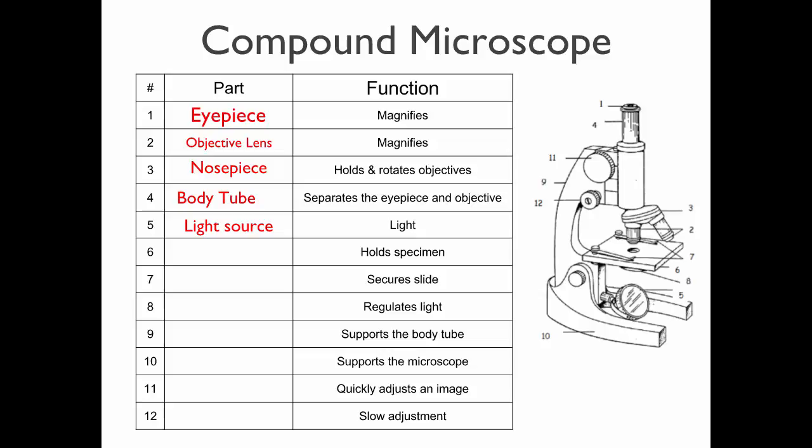This flat part where you put your slides to view is called the stage. Older microscopes have two clips that hold the slide on the stage, called stage clips. Our microscopes work a little differently. We have something called a mechanical stage. It has this spring-loaded clamp that you push on and then it clamps down holding the slide in place.